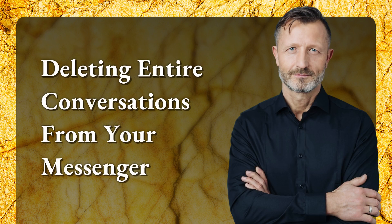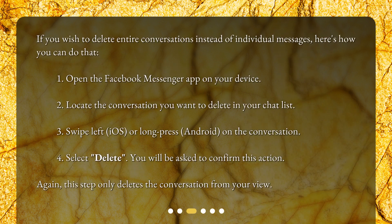Deleting entire conversations from your Messenger. If you wish to delete entire conversations instead of individual messages, here's how you can do that. 1. Open the Facebook Messenger app on your device. 2. Locate the conversation you want to delete in your chat list. 3. Swipe left (iOS) or long press (Android) on the conversation. 4. Select 'Delete.' You will be asked to confirm this action. Again, this step only deletes the conversation from your view.